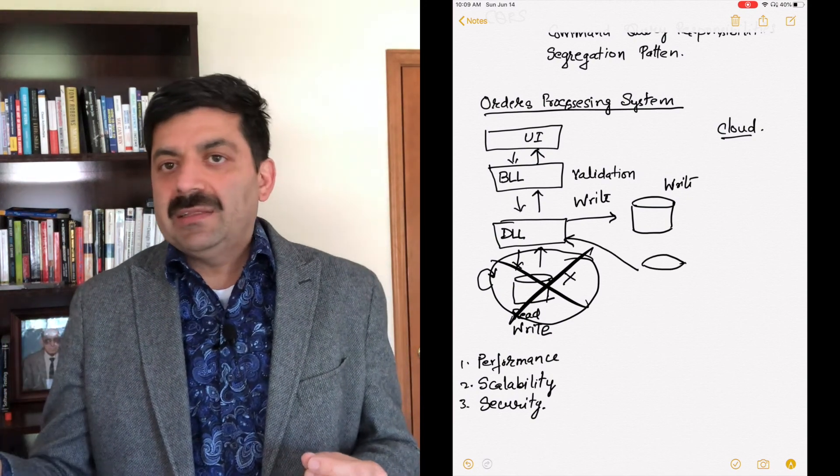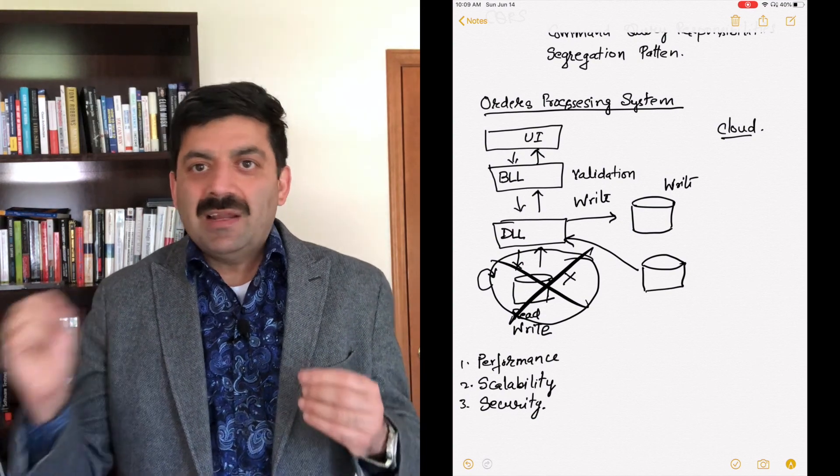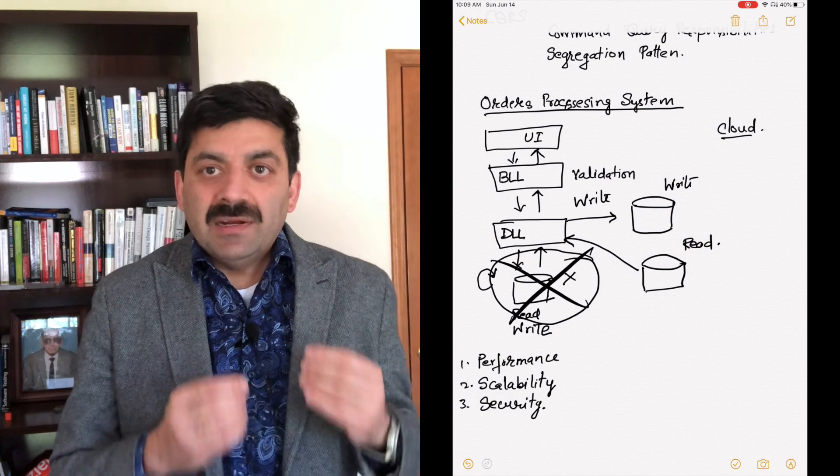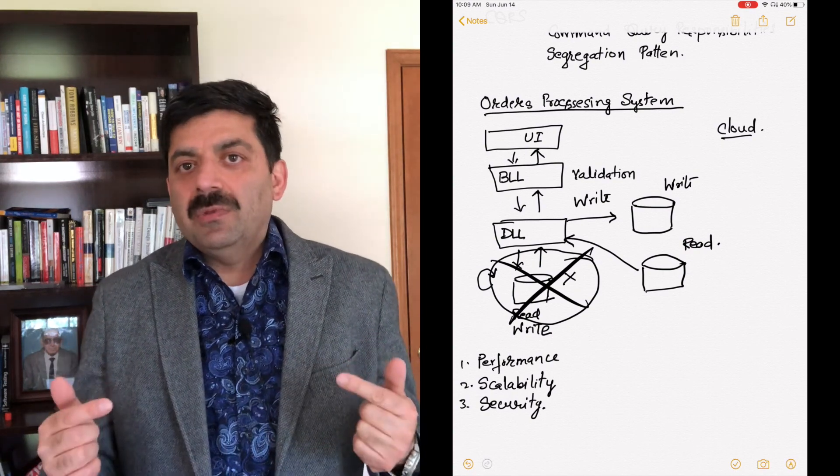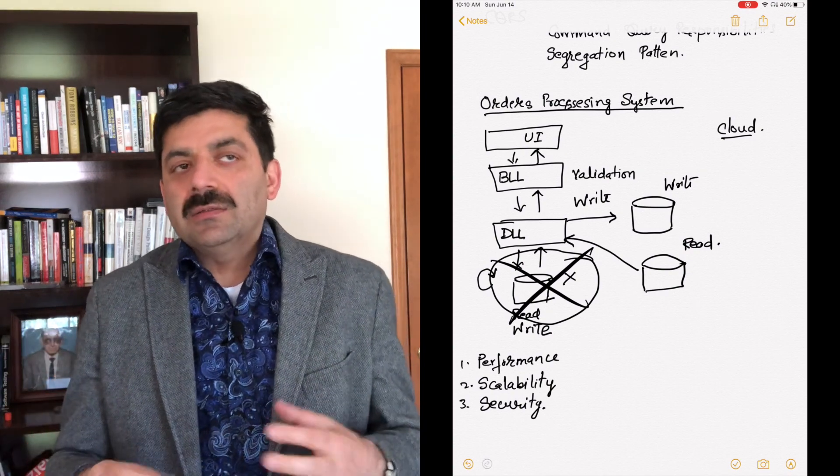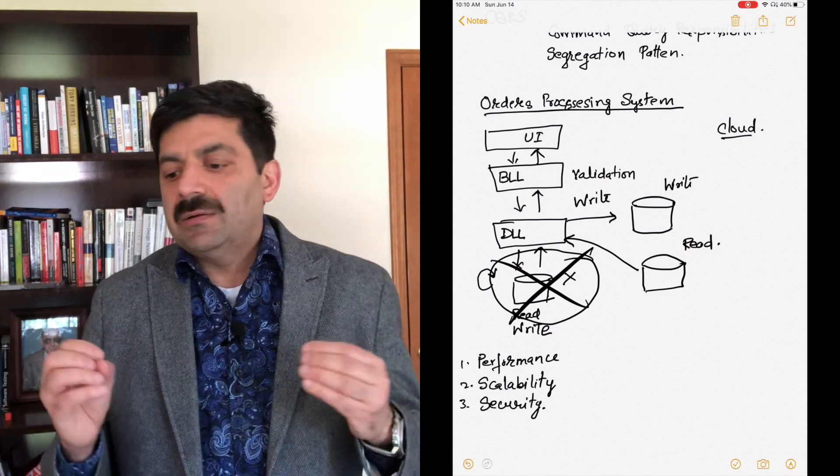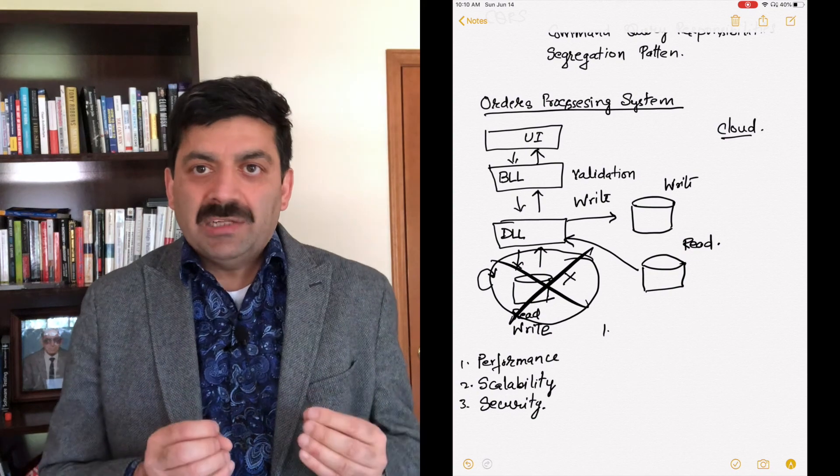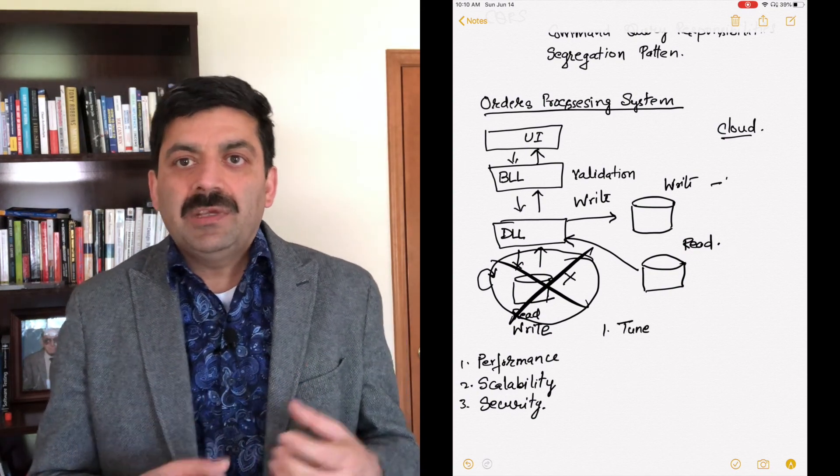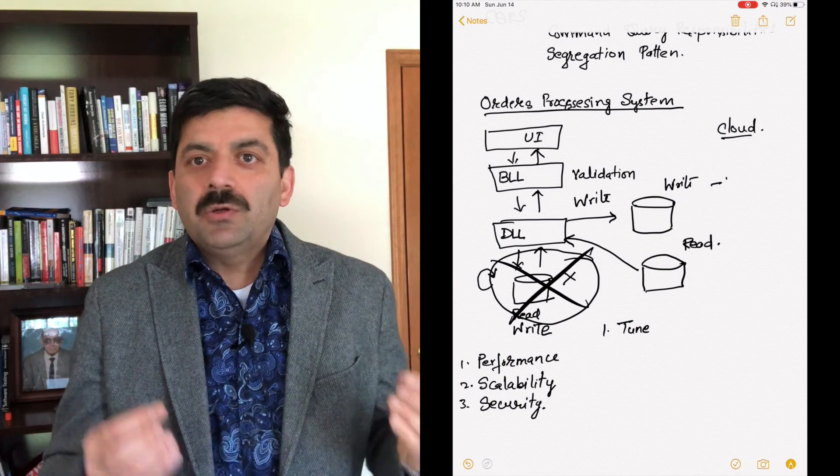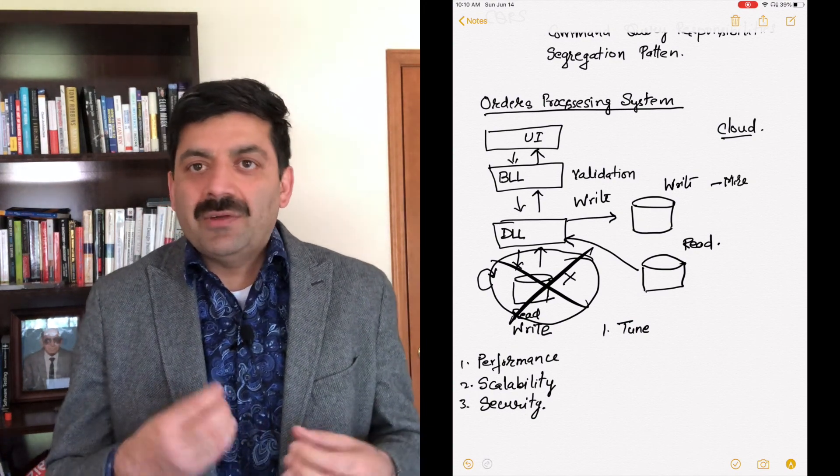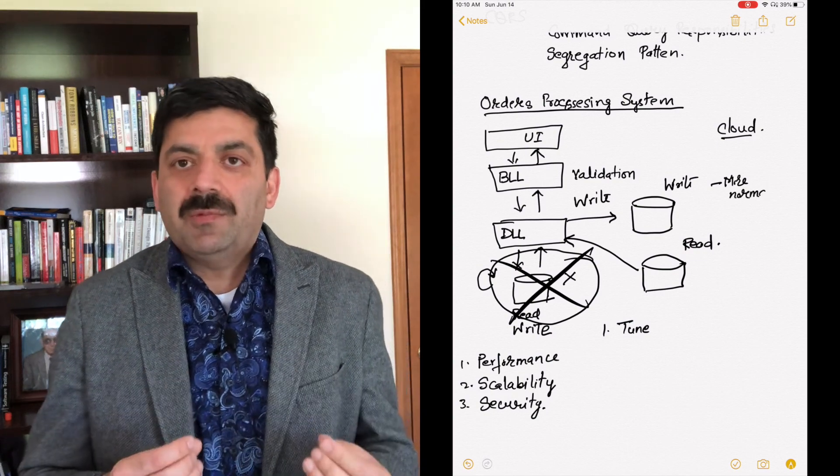And the querying database is responsible only for querying the database, reading. All the select statements go to that one. Generally the command patterns, they use event sourcing. Check out event sourcing design pattern. I'll put the link down. So all the commands are mostly command specific. So we can see if we don't use CQRS, we have a performance problem. Too many records are trying to update the database, trying to read. There are time mode profile problems.